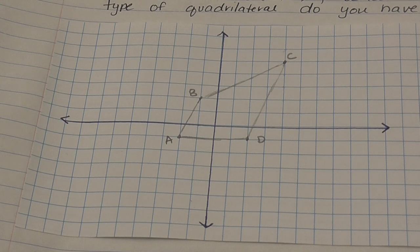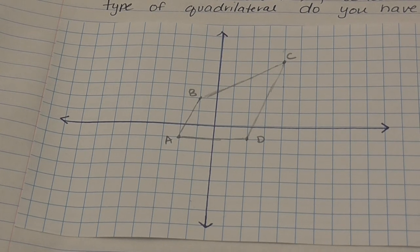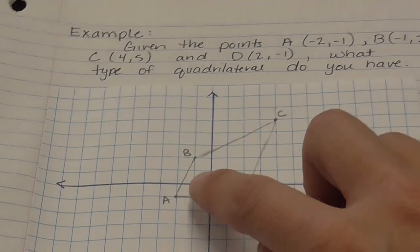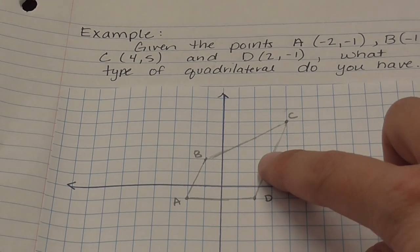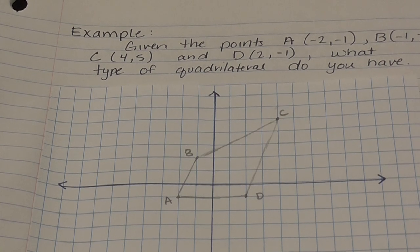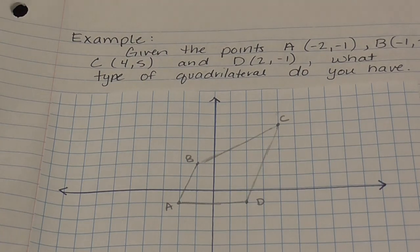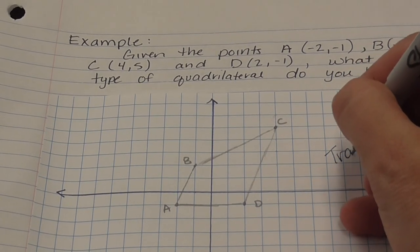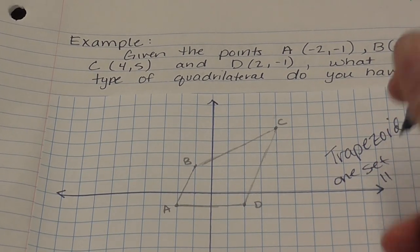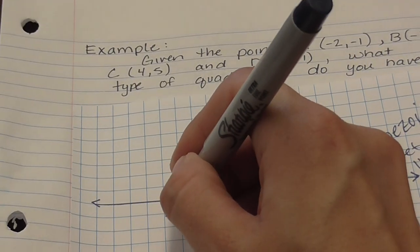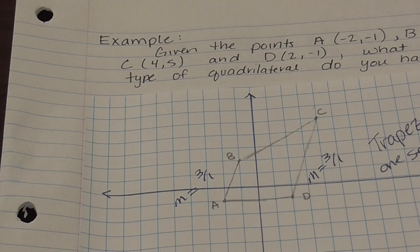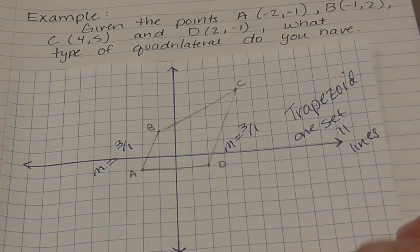We check if AB is parallel to DC. Going up 3 and over 1, AB has a slope of 3 over 1, and DC has a slope of 6 over 2 which reduces to 3 over 1. So we have exactly one set of parallel lines. That means this quadrilateral is a trapezoid — one set of parallel lines.